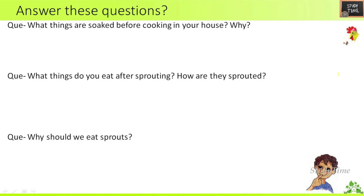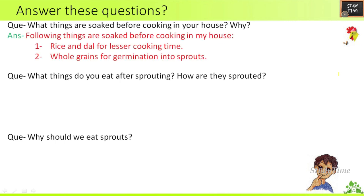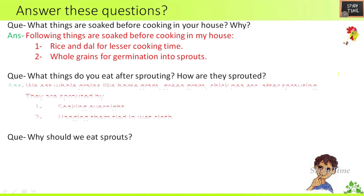First short answer question: What things are soaked before cooking in your house and why? The following things are soaked before cooking in my house: dal and rice for lesser cooking time, and whole grains for germination into sprouts.